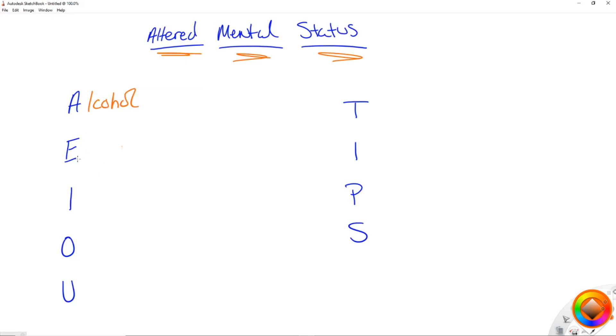E stands for a couple different things. The first biggest one is epilepsy. And epilepsy, remember, is seizures. So does this patient have a seizure history or are they prone to seizures? Or maybe this is a new onset seizure, maybe due to infection or fever or an overdose or something of that nature.